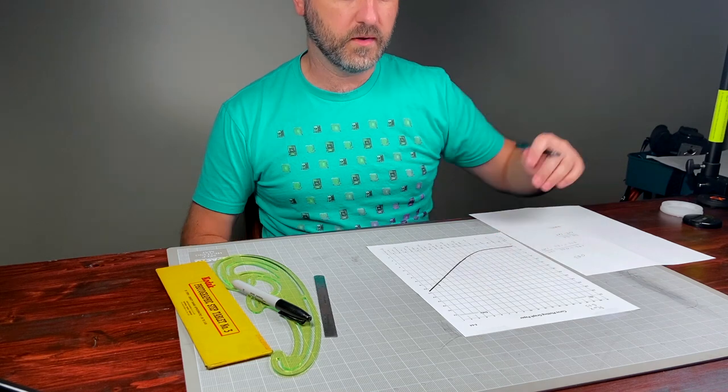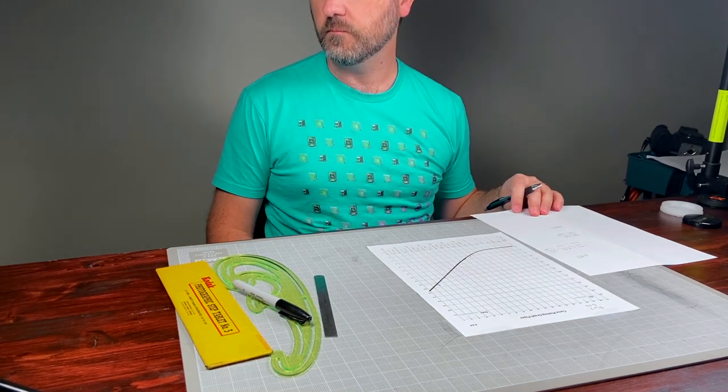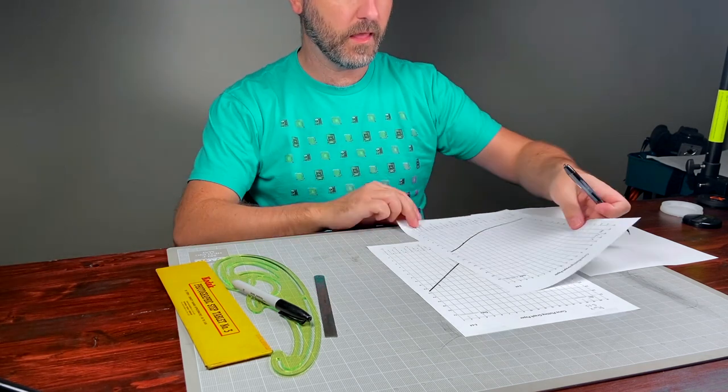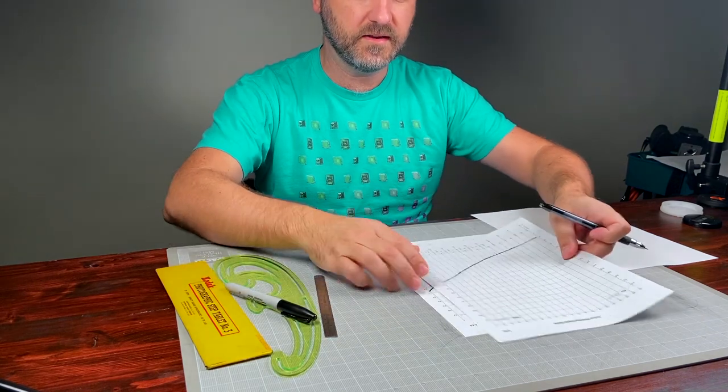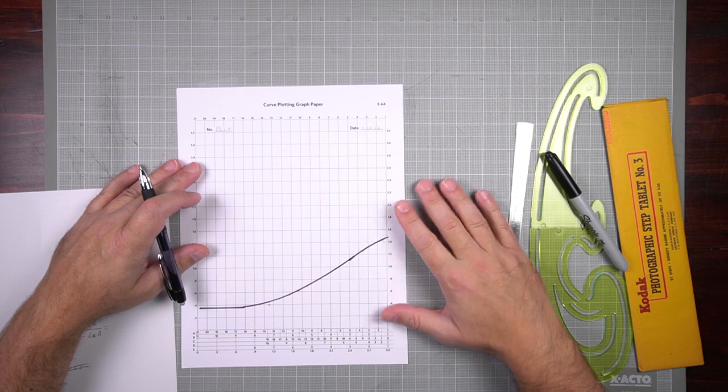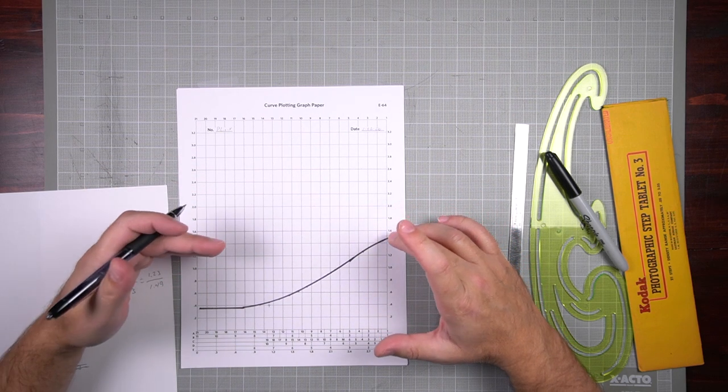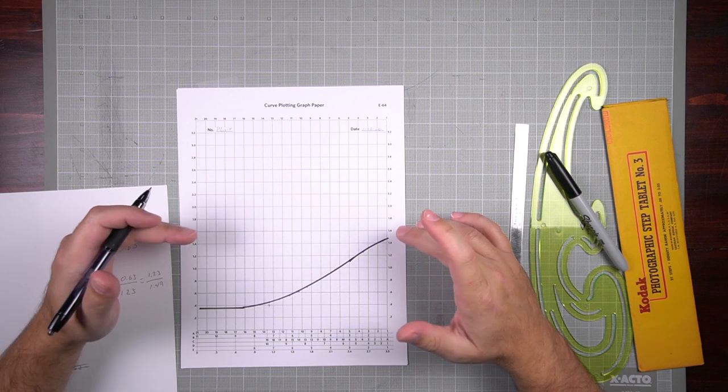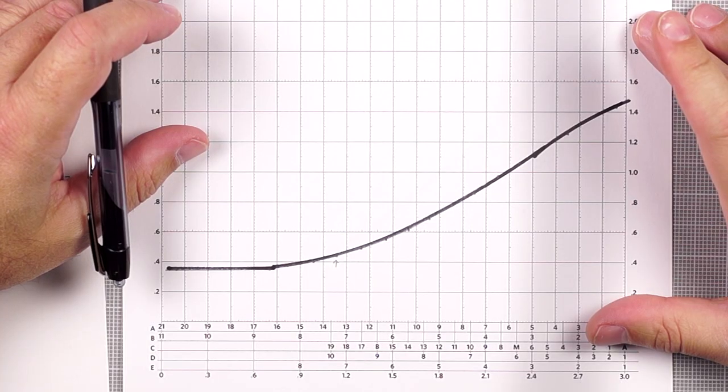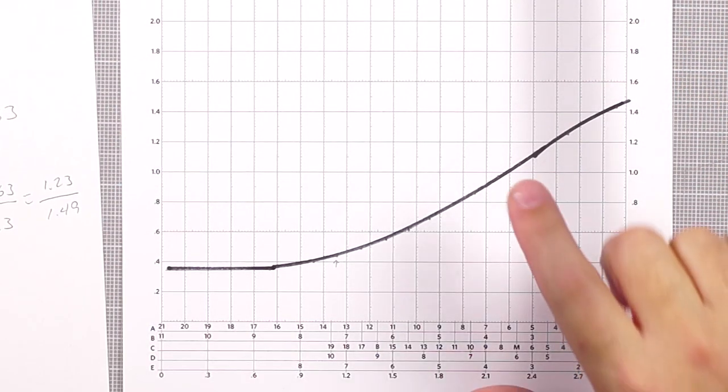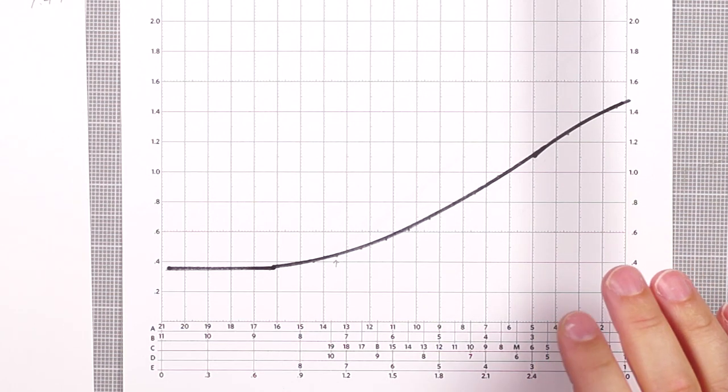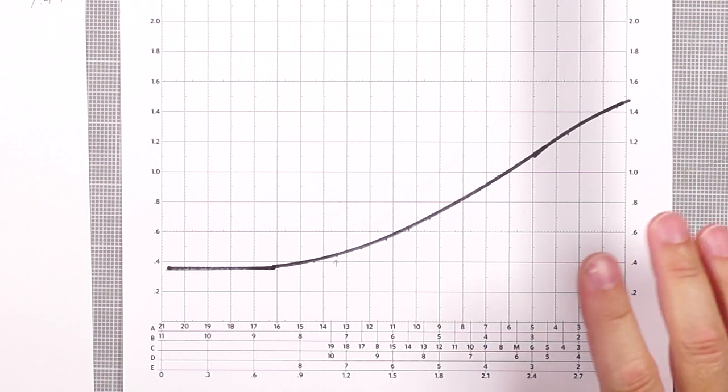So we can then compare that to other film. Let's take a look at Plus-X in D76. This is a curve of D76 stock for whatever time Kodak recommends. I don't remember what it is. It's fairly short though if I remember, like five or six minutes.